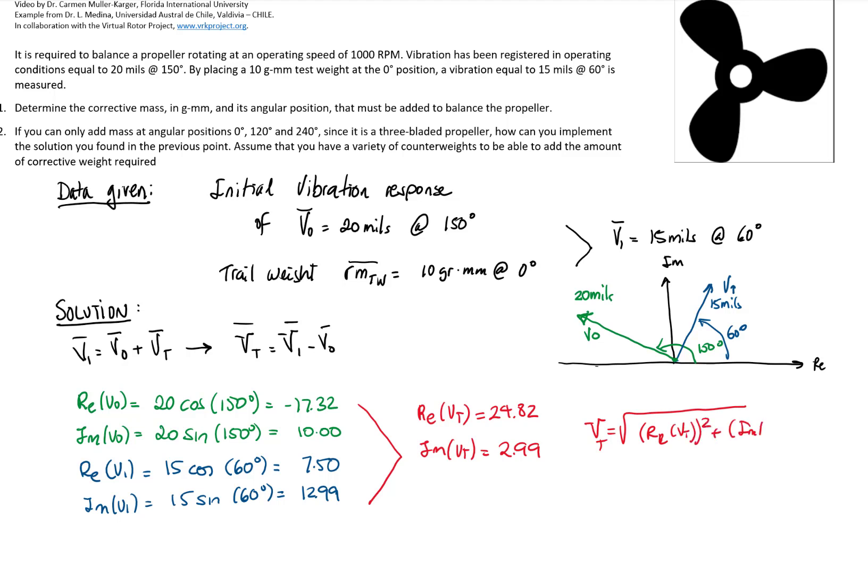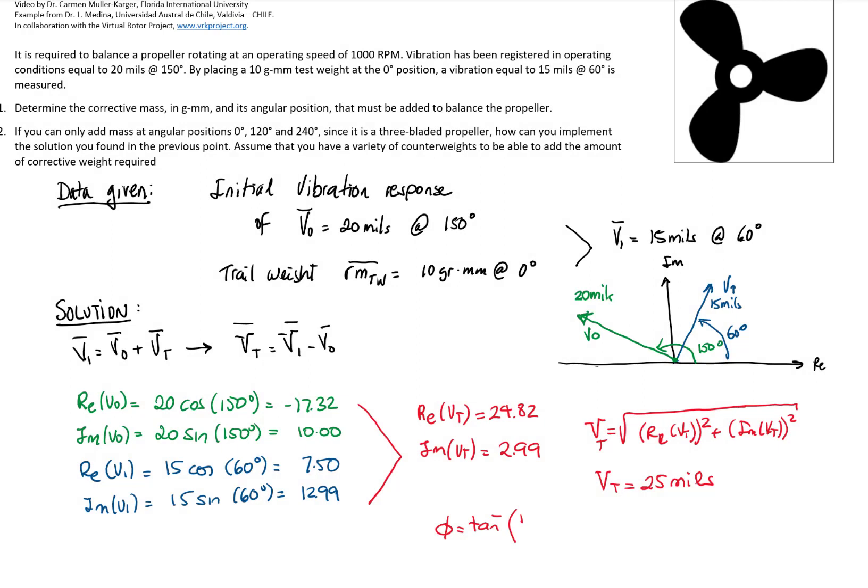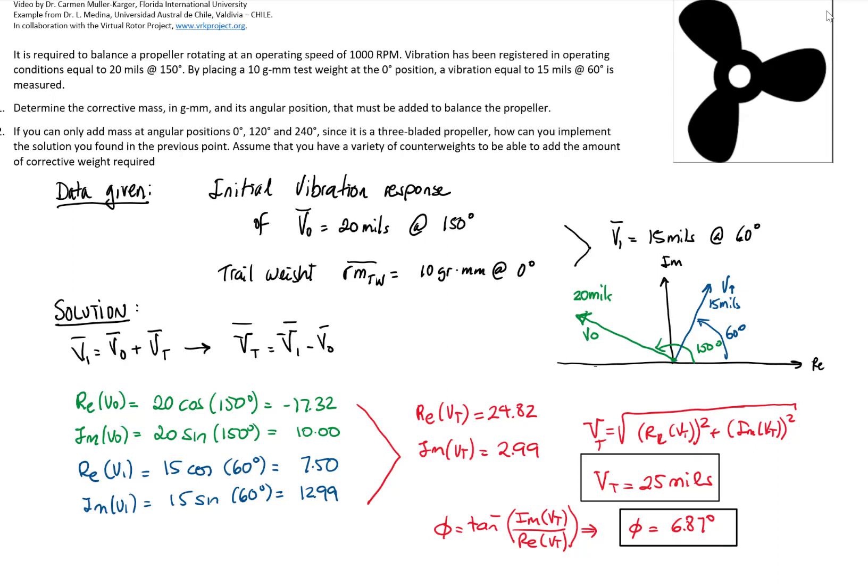I can get the magnitude of my vector, which will be the real part squared plus the imaginary part squared. That gives me a magnitude of 25 mL. I can get the phase angle as the inverse tangent of the imaginary part divided by the real part, which gives me a phase angle of 6.87 degrees. This can be represented graphically as the vector that goes from the tip of the initial run to the tip of the second run.